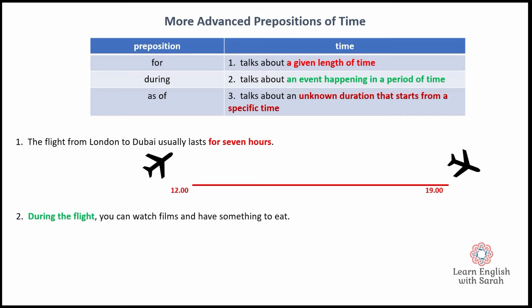Long flights are not very exciting unless you can afford to fly first class — I don't fly first class. So during the flight, you can pass the time by watching films, and you can have something to eat. These two things — watching films and having something to eat — are the events happening in the period of time.